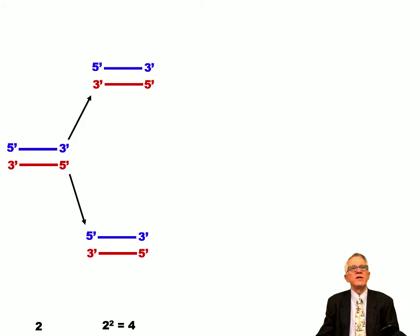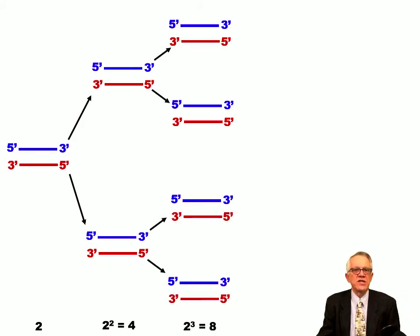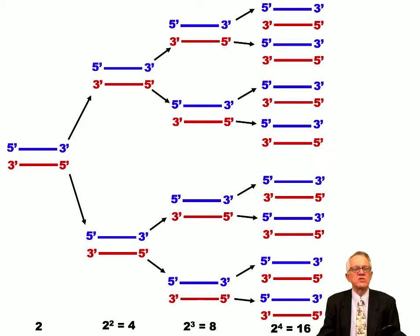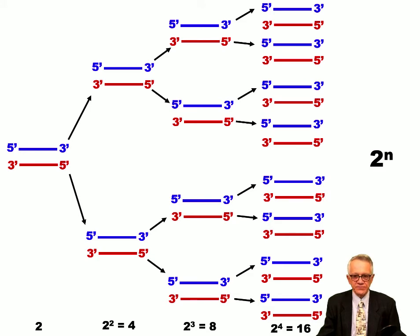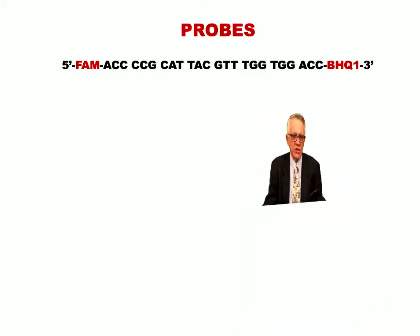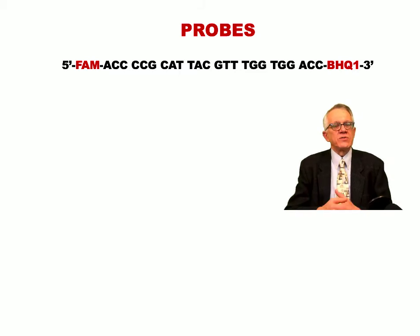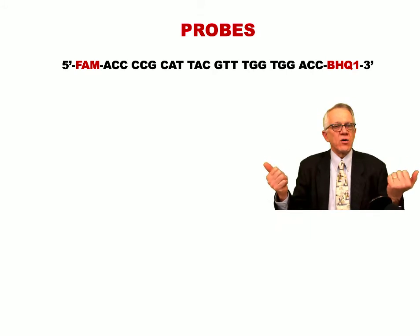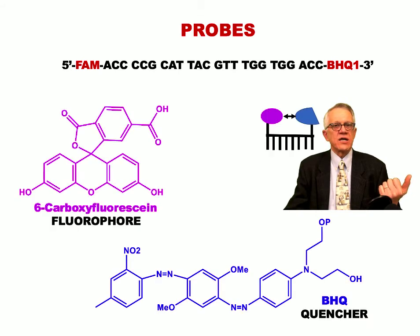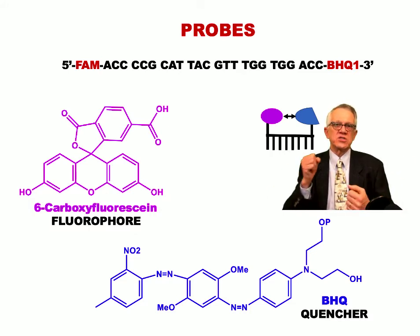Every cycle duplicates the number of copies we have. So the more cycles that occur, the more copies we get. Initially, depending on the amount of starting material, the amplification goes very fast because it is an exponential process. The probes are oligonucleotides, the same as the primers, except they have a fluorophore on one end and a quencher on the other end.